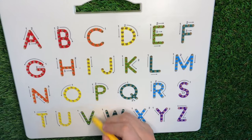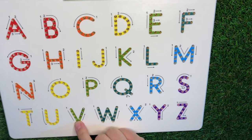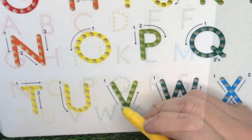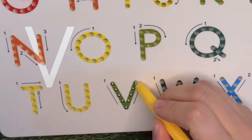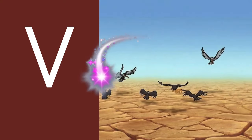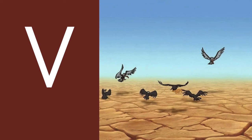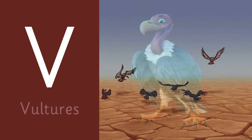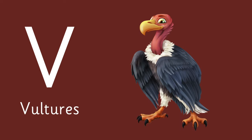V is for... Do you remember this scene? What birds are these? They are vultures. V is for vultures.